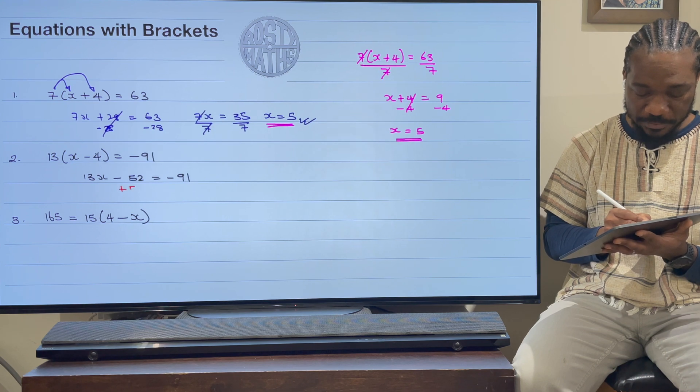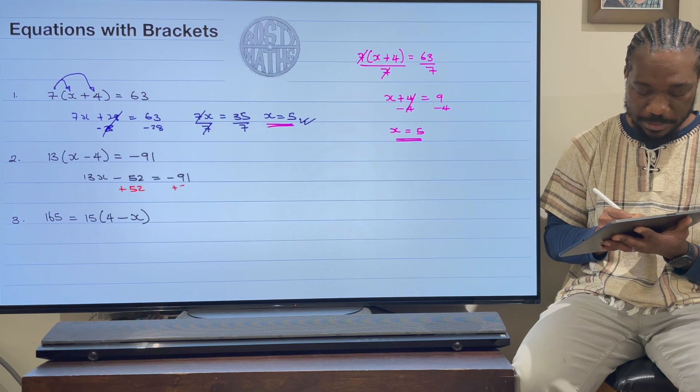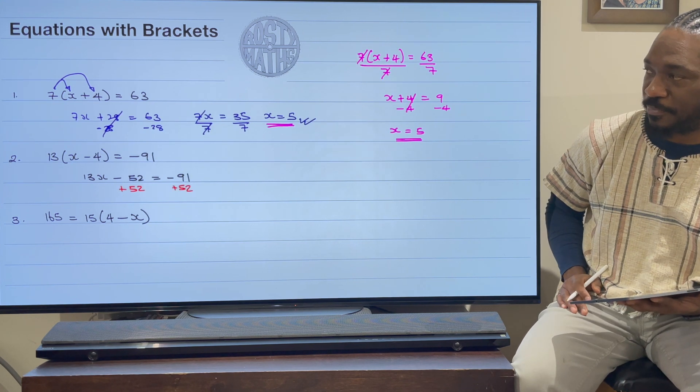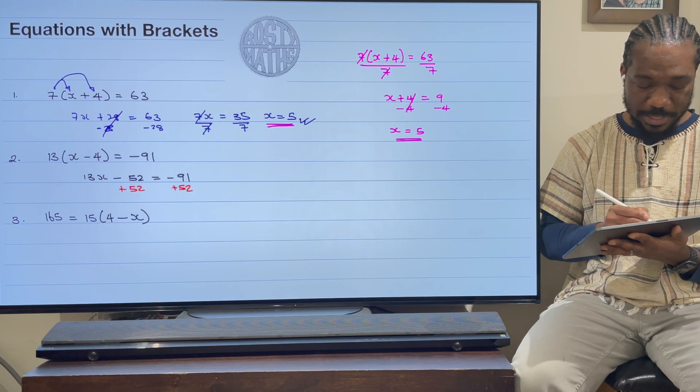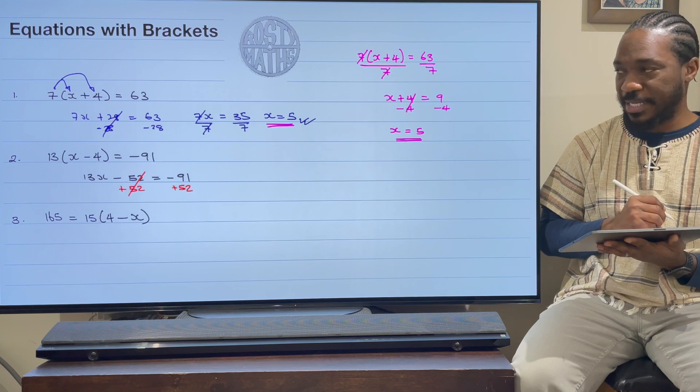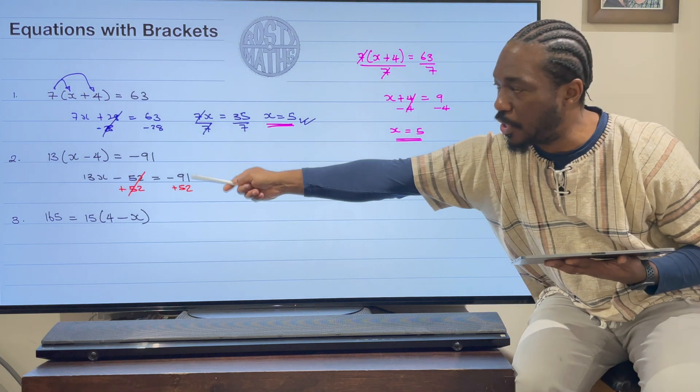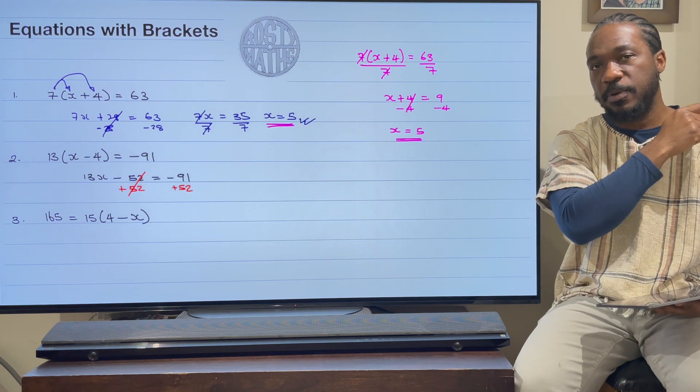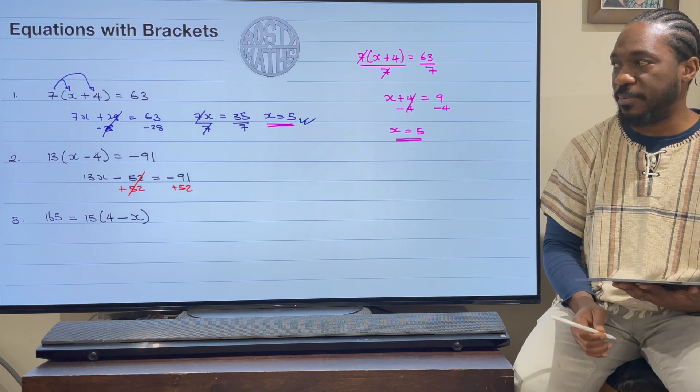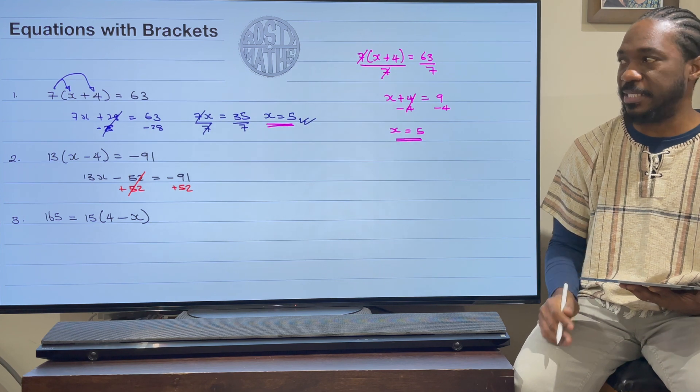So the next step now is we need to remove that 52 using the inverse operation. Let's change colors for this. So we're going to add 52 and add 52 here. And once we add the 52, what will end up happening is this is going to cancel, but these two you will subtract. If you're not sure about that, click on a pop-up banner up here and go and have a look at my videos on adding and subtracting negative numbers.